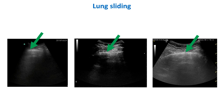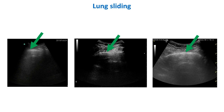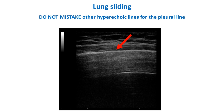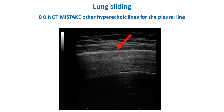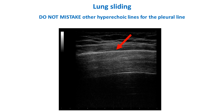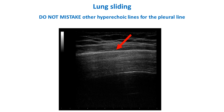The first step is to visualize the pleural line — this hyperechoic horizontal line indicated by the green arrows — and the lung sliding, the horizontal movement of the pleural line synchronous with respiration. It is important not to confuse the pleural line with other hyperechoic lines that are not the pleural line, as in this case where the red arrow indicates a hyperechoic horizontal line which does not move with respiration and thus is not the pleural line.